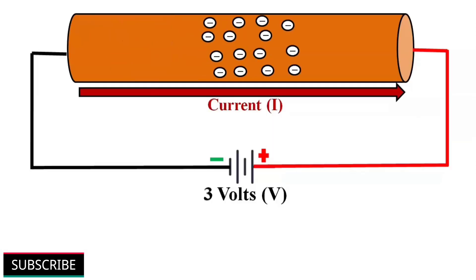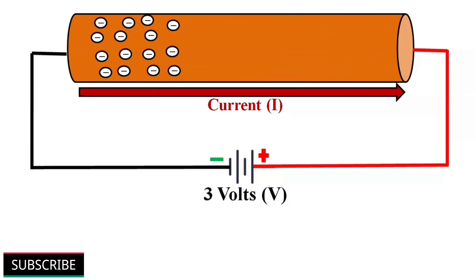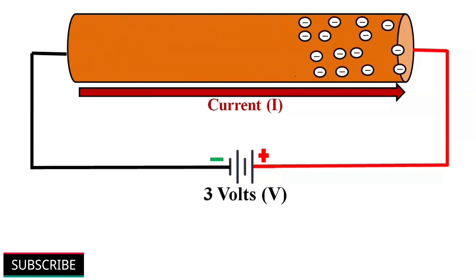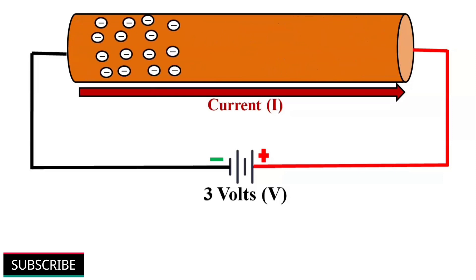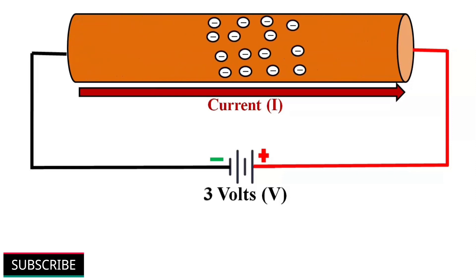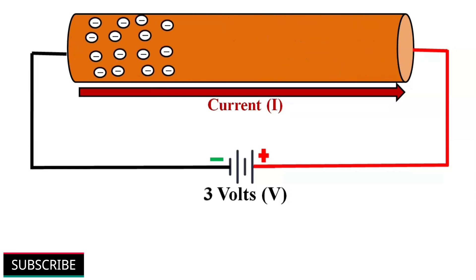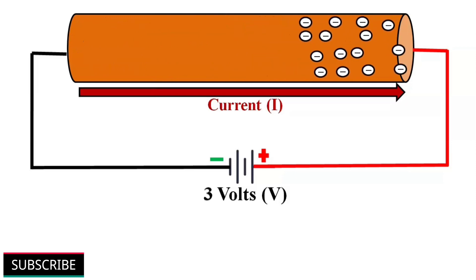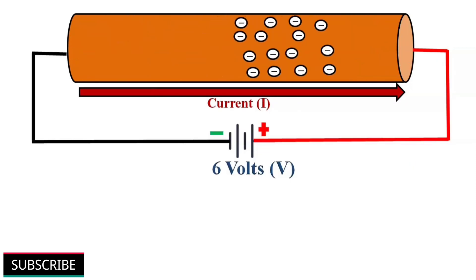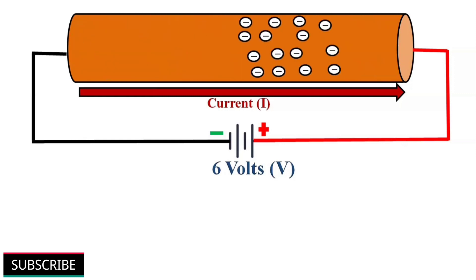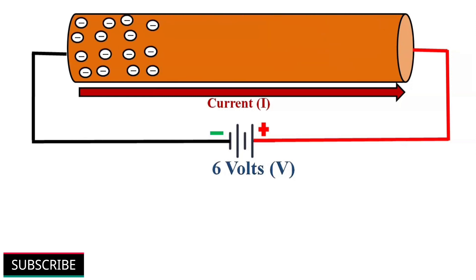Let's observe what happens when we apply some voltage — for example, 3 volts — to a conductor. We will get a uniform motion of free electrons, which is what we call current. If we double the applied voltage to 6 volts, then the rate of flow of electrons also increases. We will get a faster flow of charge particles, or a higher flow of current.